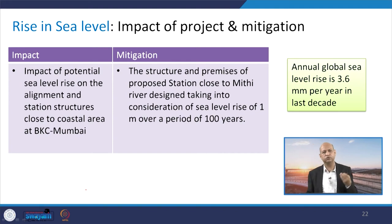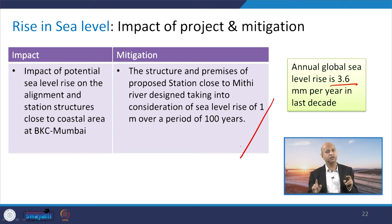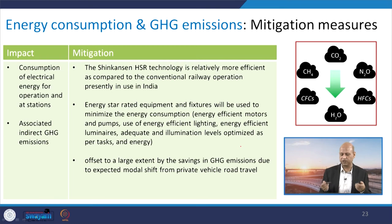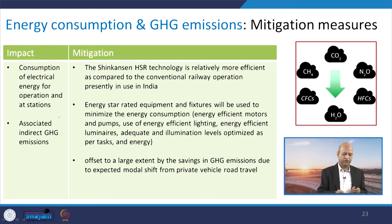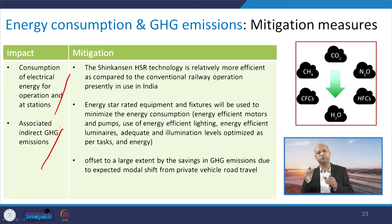Sea level rise due to global warming — currently averaging around 3.6 millimetres per year — has been considered in the project design. The project can accommodate sea level rise of up to 1 metre, and this has been included in design calculations. Regarding energy consumption and greenhouse gas emissions, because the train runs on electricity using an efficient technology, there will be a 10% reduction in greenhouse gas emissions overall.